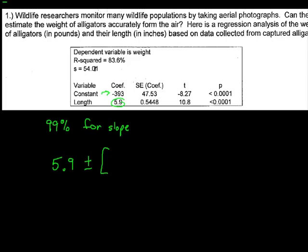So we do a 5.9 plus or minus a t star. Let's see here, did it say how many alligators I had? I think this problem was based on 15 alligators. So that would be 13 degrees of freedom. I'm going to do an invert T, 0.005 for the half a percent on the tail there for 99% confidence.